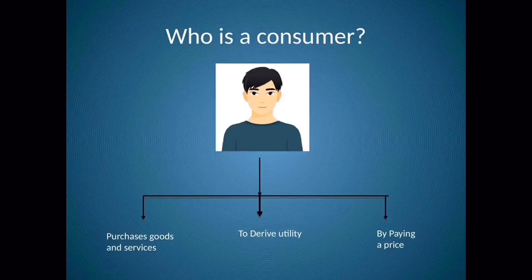Therefore, a rational consumer, before making a decision, will look at two things. First, whether the product has some utility or not. And the next thing will be the price of the product.